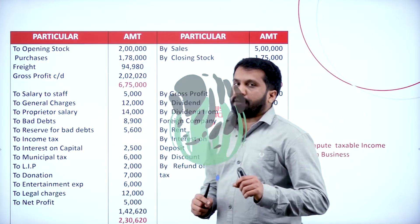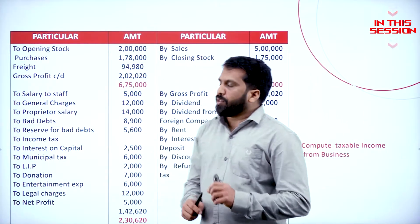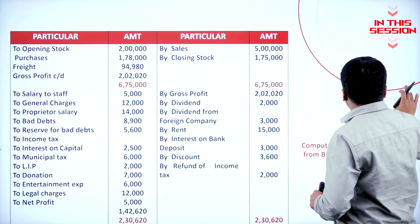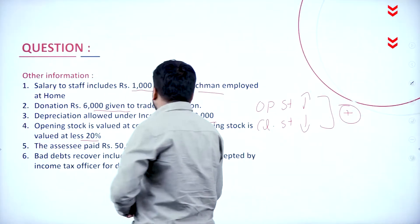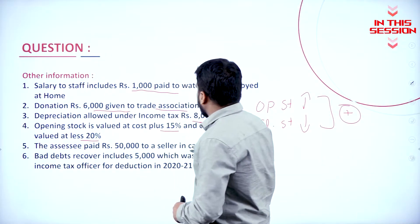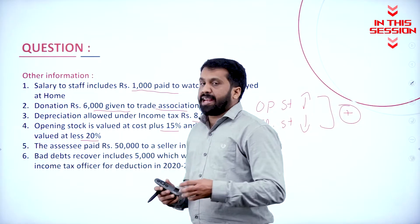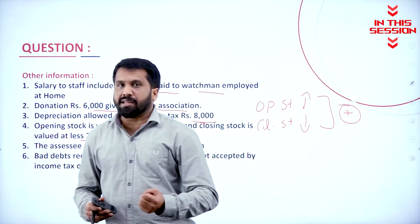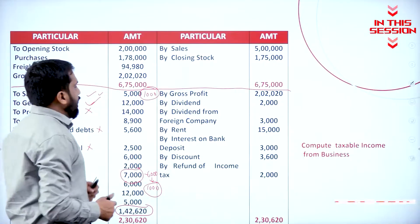Your business problem will start from when? Your business problem always starts with RCC pay 50,000 to seller in cash. Remember, anything which is paid more than 20,000 in the form of cash.